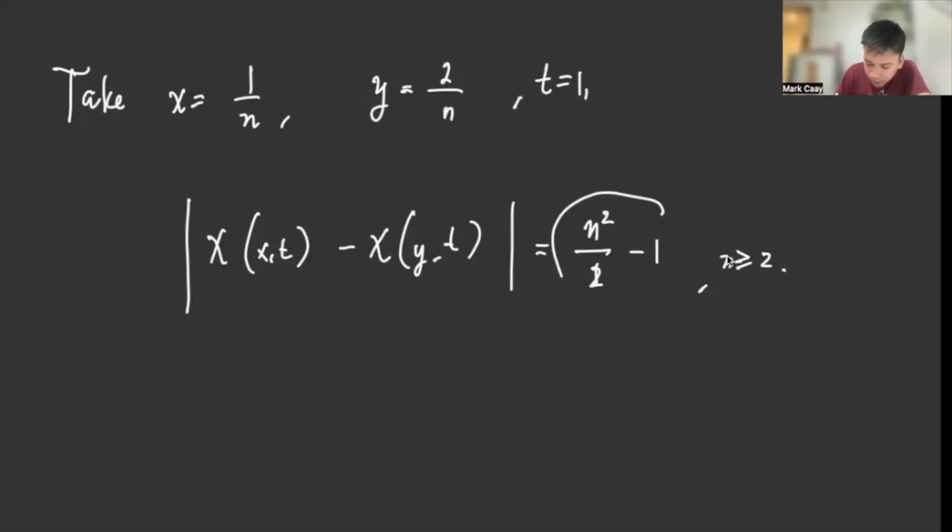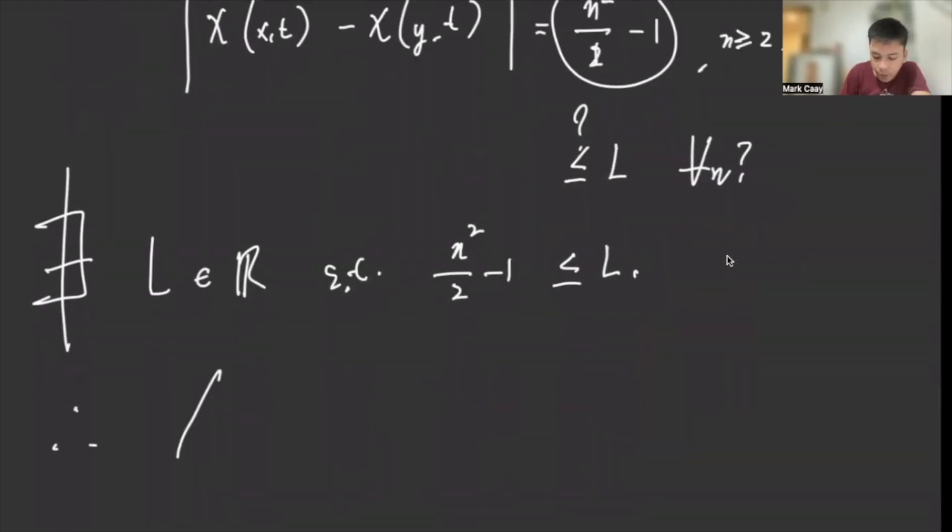Are we sure that this one is less than or equal to L for all n? So are we sure? Is there something that will satisfy? Obviously not. We cannot find one here because this n is independent of L. So ibig sabihin there does not exist L in R such that n²/2 - 1 is less than or equal to L. So therefore, our X is not Lipschitz. That's it.